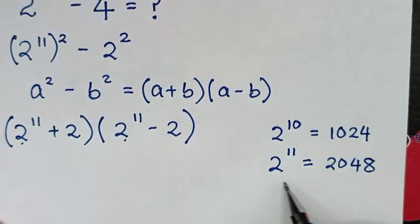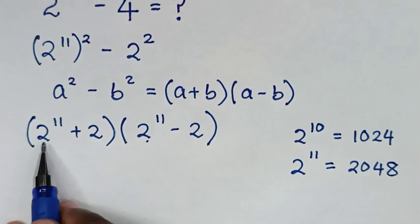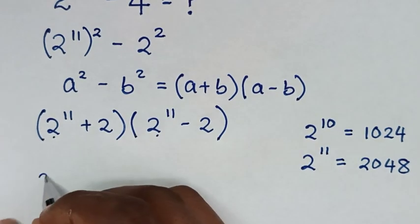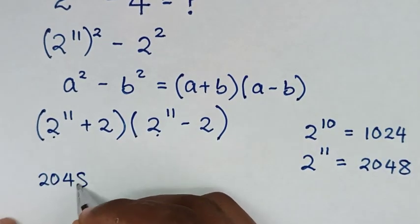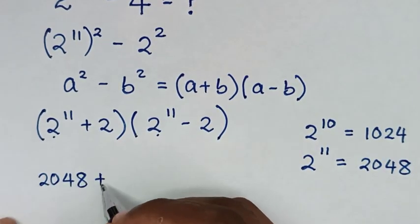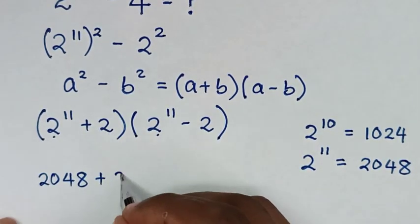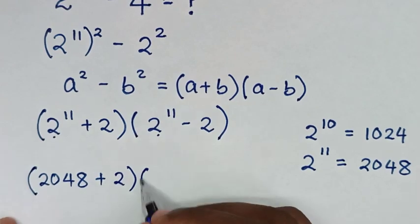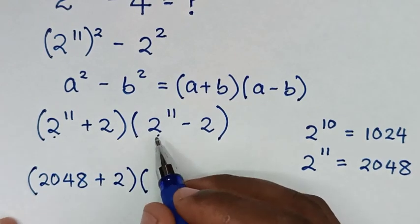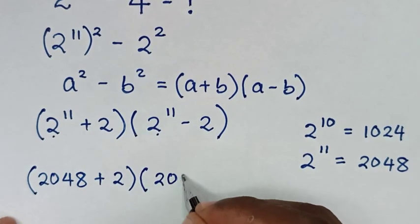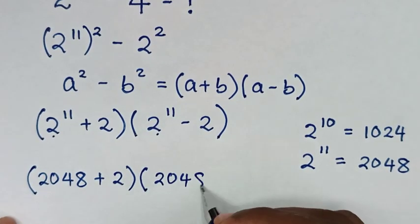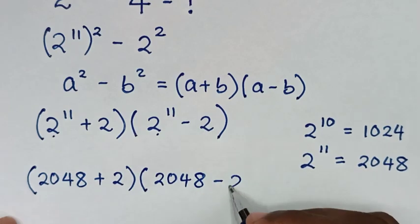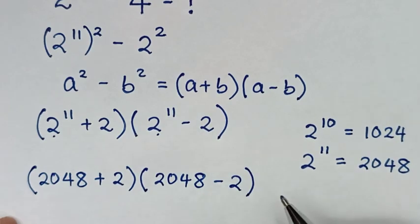So we substitute the value of 2 power of 11, which is 2048. Then we get (2048 plus 2) times (2048 minus 2).